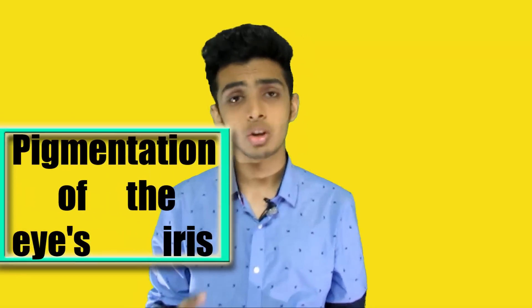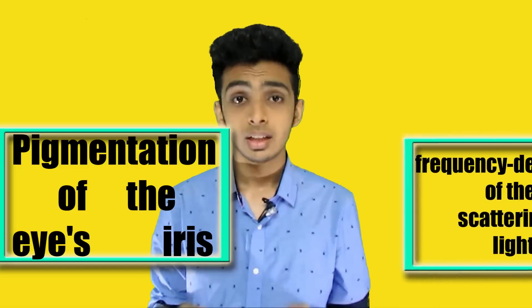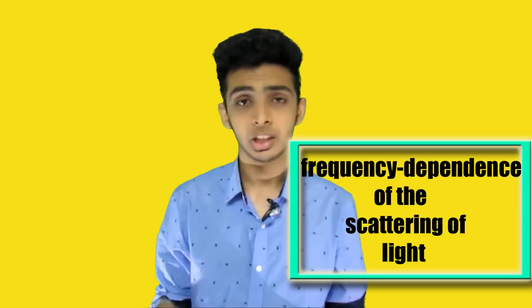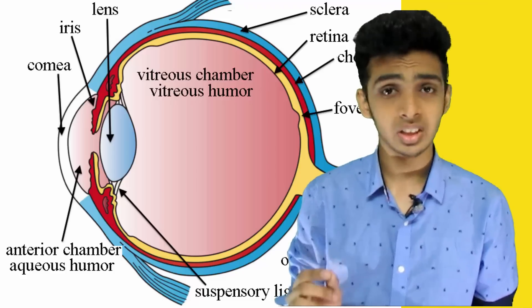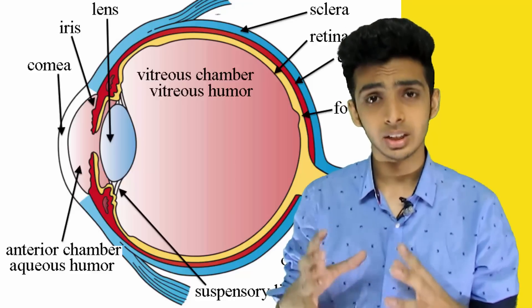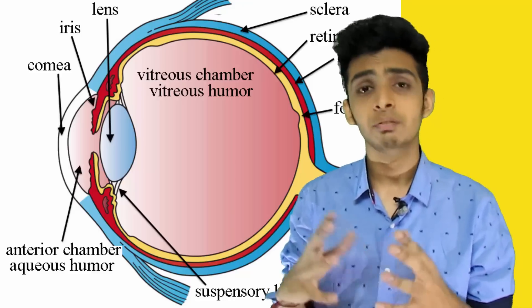Eye color is determined by two factors: the pigmentation of the iris and the frequency dependence of scattering of light by the turbid medium in the iris. In humans, iris pigmentation varies from light brown to black depending on the concentration of melanin. The iris is a thin circular structure which controls the diameter and size of the pupil, thus the amount of light reaching the retina. The color of the iris gives the eye its color.